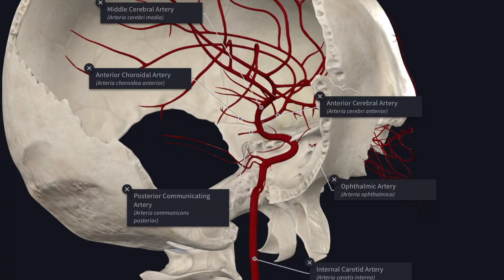In this video, we'll study about the carotid system which supplies the brain. The internal carotid artery, which is the terminal branch of the common carotid artery, traverses the carotid canal at the base of the skull and enters the middle cranial fossa beside the dorsum sellae of the sphenoid bone, where it runs forward.